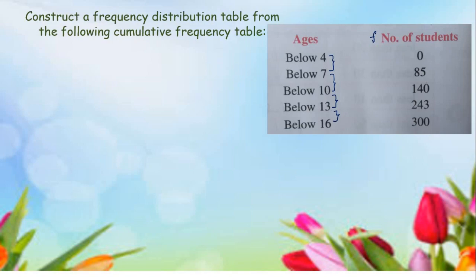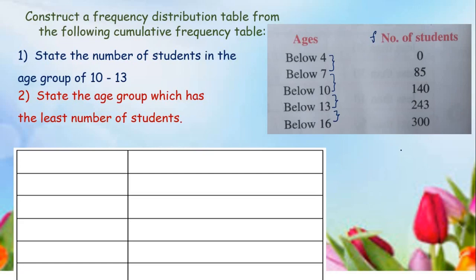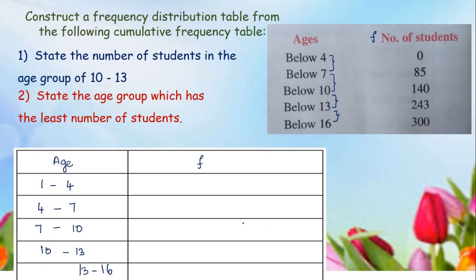We write the class intervals as 1 to 4, 4 to 7, 7 to 10, 10 to 13, 13 to 16. The frequency table has columns for age and frequency. For below 4, the cumulative frequency is 0, meaning there are no students younger than 4 years, so the frequency for 1 to 4 is 0. Below 7, the cumulative frequency is 85, meaning 85 students are less than 7 years of age, so for the interval 4 to 7 there are 85 students.